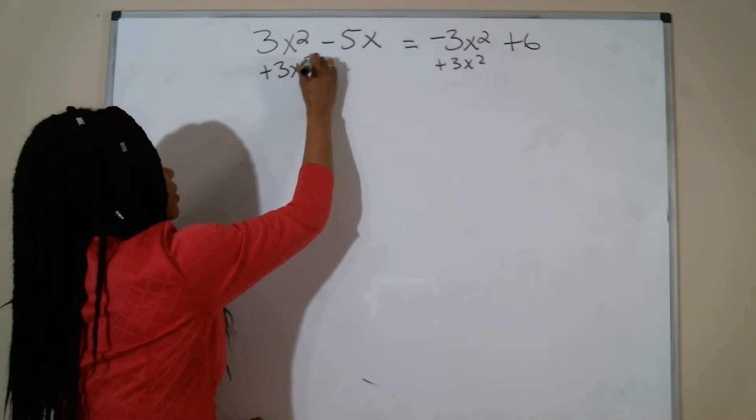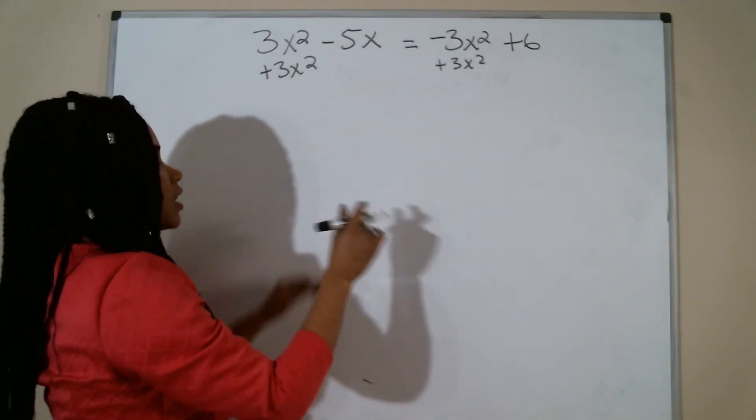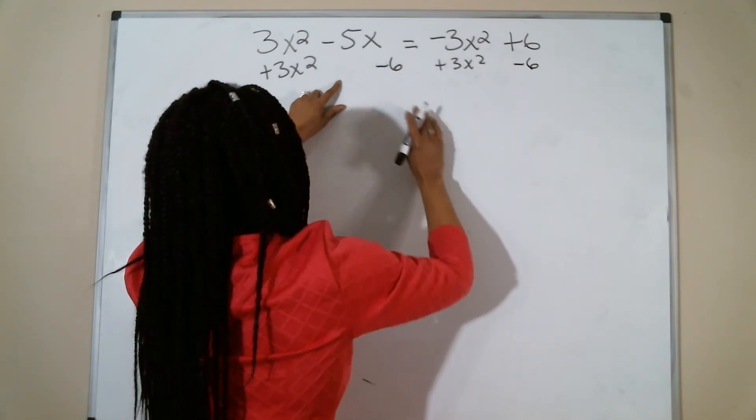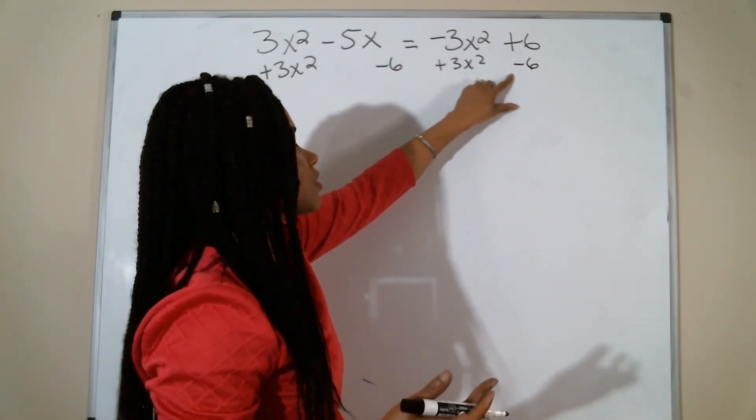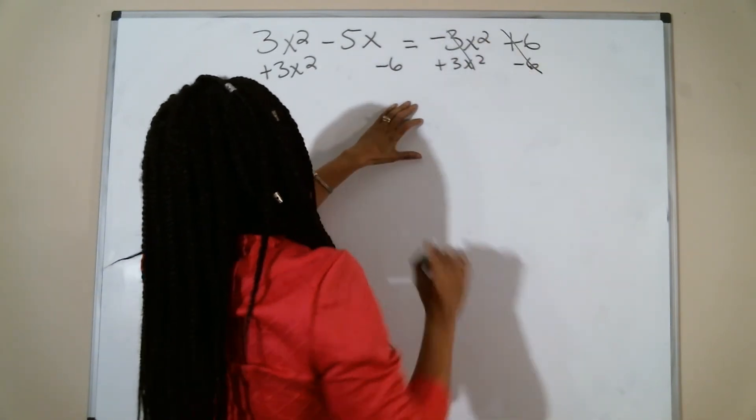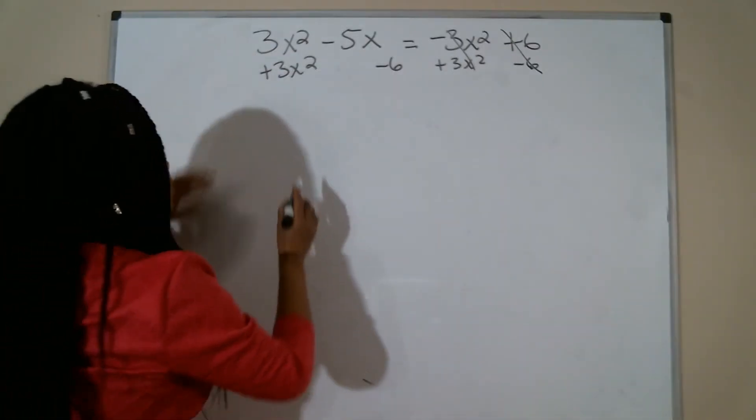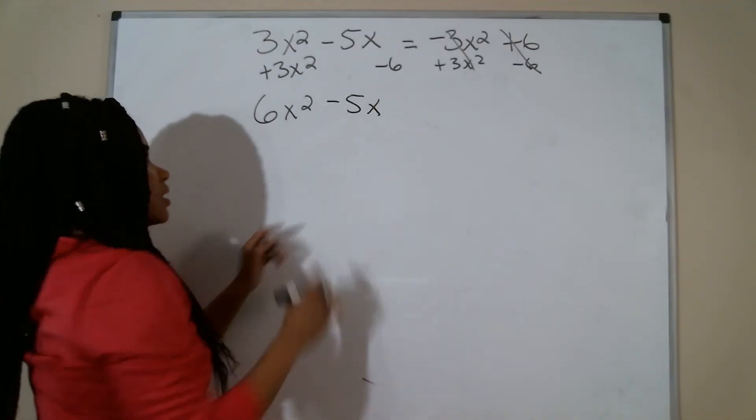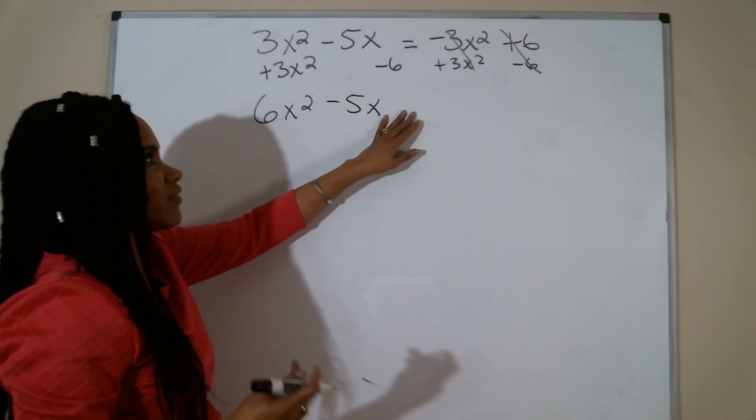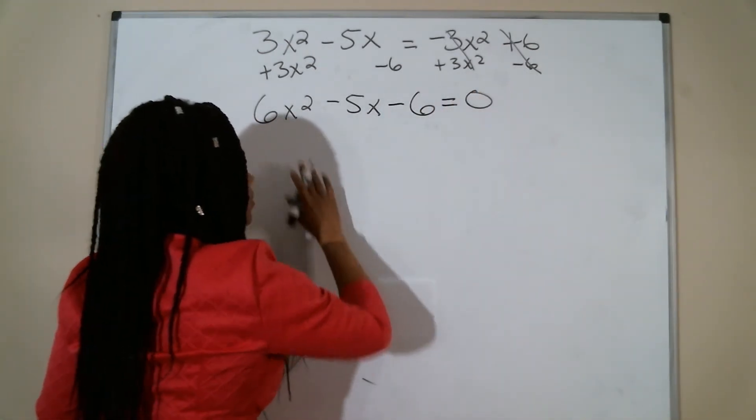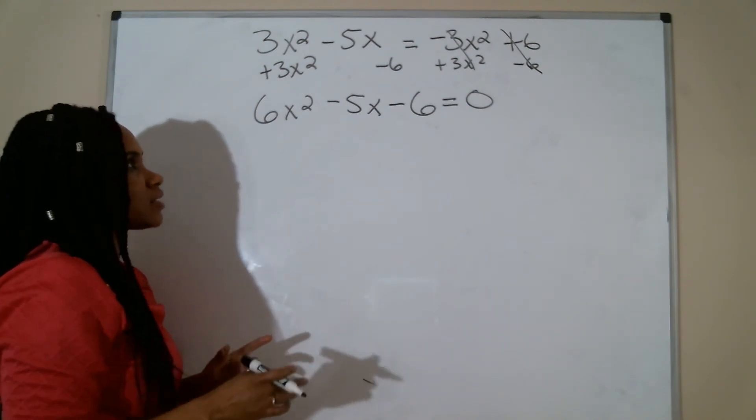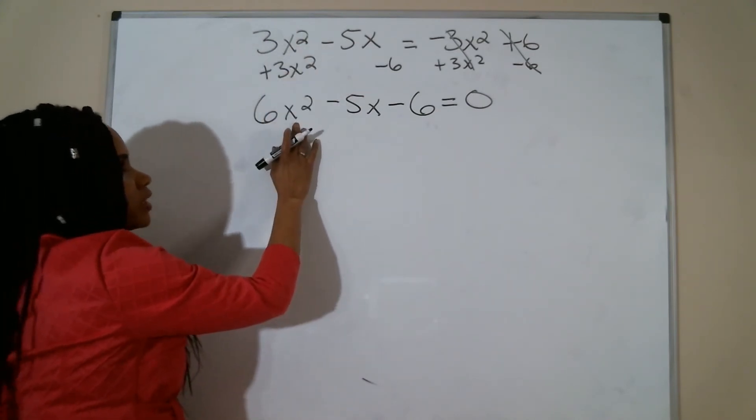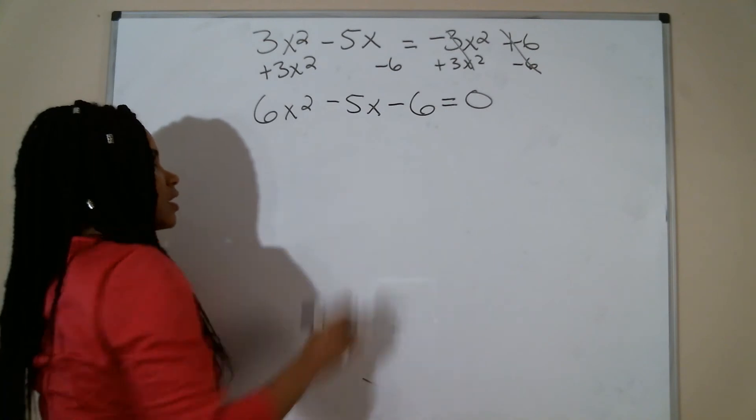So I have a 3x squared that is negative. I'm going to add it to the 3x squared over here, because that is my like term. They both have an x squared. And then I'm going to subtract 6 from both sides because that is a positive 6. It cancels out on this side. 3x squared plus 3x squared is 6x squared. I bring down a negative 5x, because that negative 6 is not a like term. You can only combine your like terms, meaning they have the same variable and the same exponent.